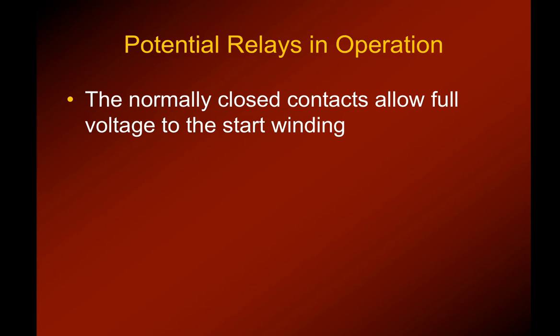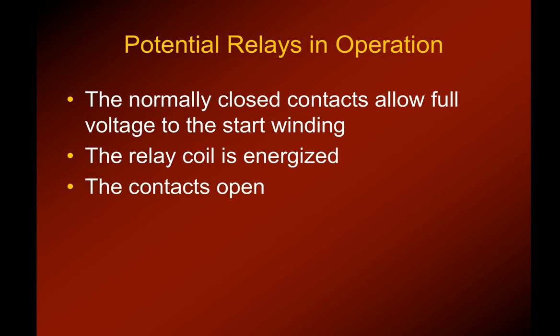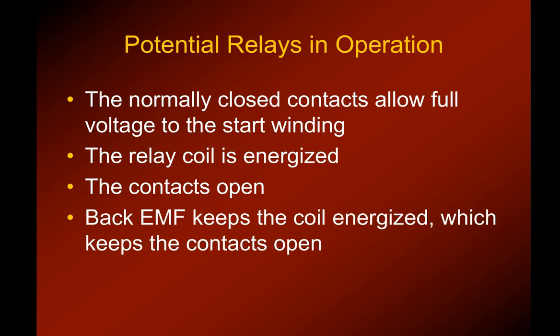Potential relays have normally closed contacts that allow the full line voltage to be applied to the start windings. When we have those normally closed contacts, the relay coil becomes energized. When that relay coil is energized, the contacts open and it drops the start winding out of the circuit.